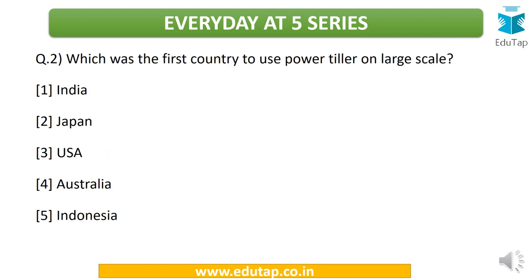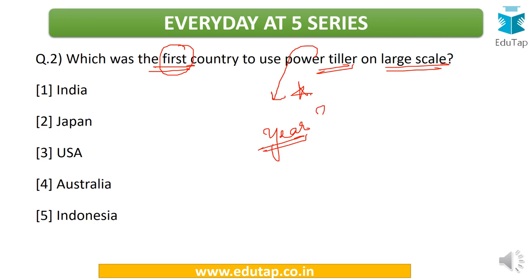The next question: which was the first country to use the power tiller on a large scale? We have framed this question on power tiller because there might be questions on the origin or usage of these implements in various countries. The options are India, Japan, USA, Australia, and Indonesia. If possible, also tell me the year in which it was first used — so two parts: which country, and the year in which it was first used.